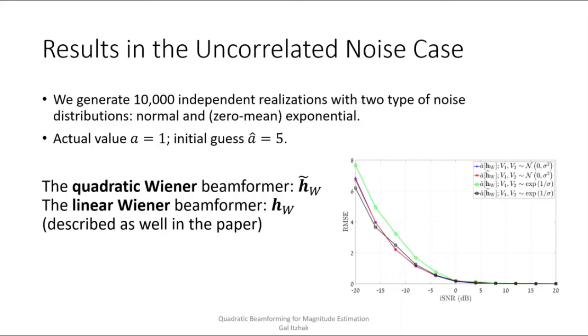For low input SNRs and normally distributed noise, both estimators perform the same. As we can see right here that the blue and red curves coincide. Now this results from the fact that with normally distributed noise, the latent information in high order moments is limited. For example, the third order moment is strictly zero.